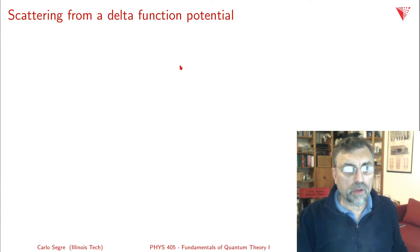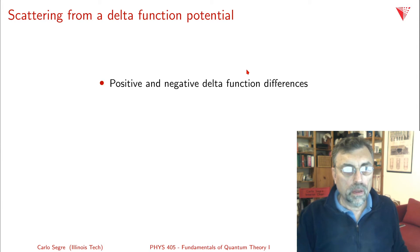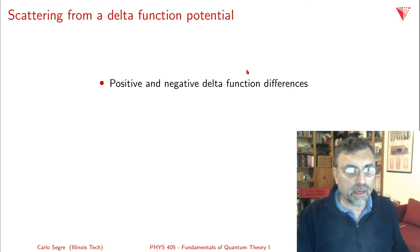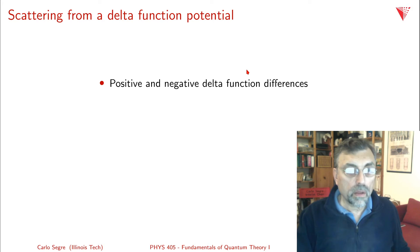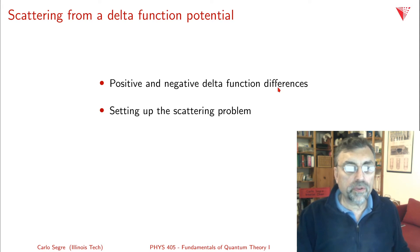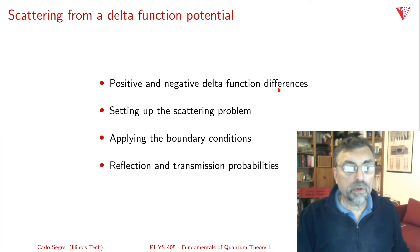In this video, we're going to discuss scattering from a delta function potential. We already covered the bound states of a negative delta function; now we're going to talk about scattering where energies are greater than zero. First, we'll discuss the differences between positive and negative delta functions, then set up the scattering problem, apply the boundary conditions, and finally calculate reflection and transmission probabilities.